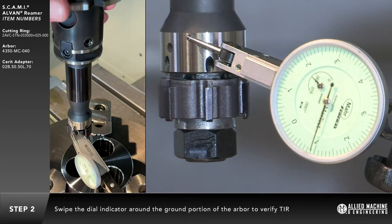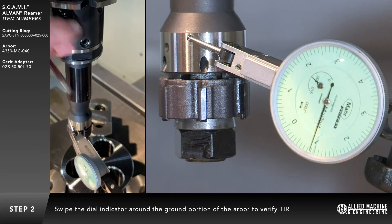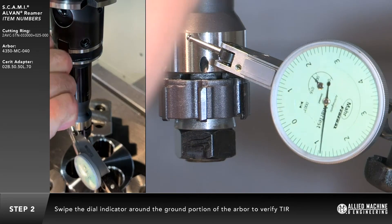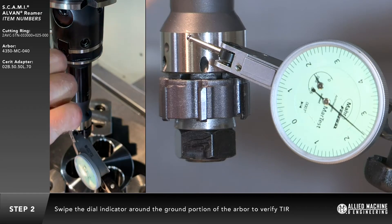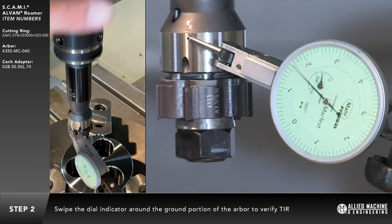Swipe the dial indicator around the ground portion of the arbor near the coolant outlet holes to verify the total indicator runout, or TIR.